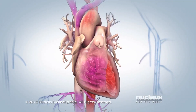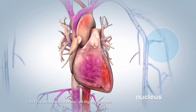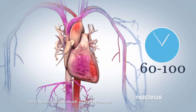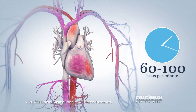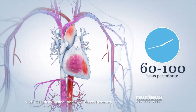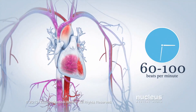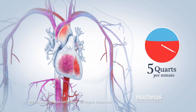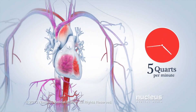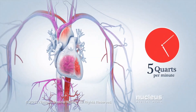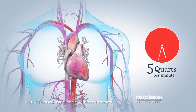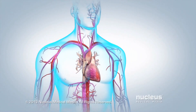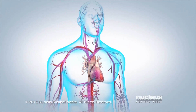Your heart beats an average of 60 to 100 beats per minute. In that one minute, your heart pumps about five quarts of blood through your arteries, delivering a steady stream of oxygen and nutrients all over your body.